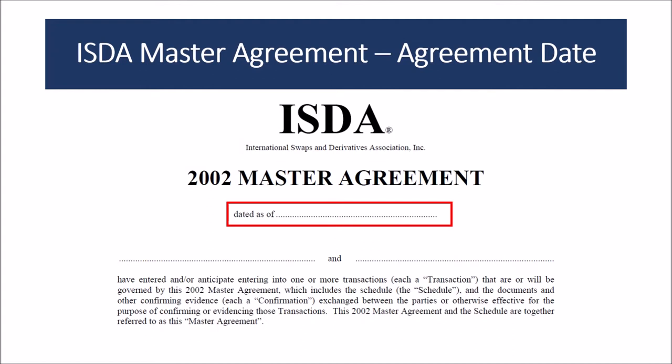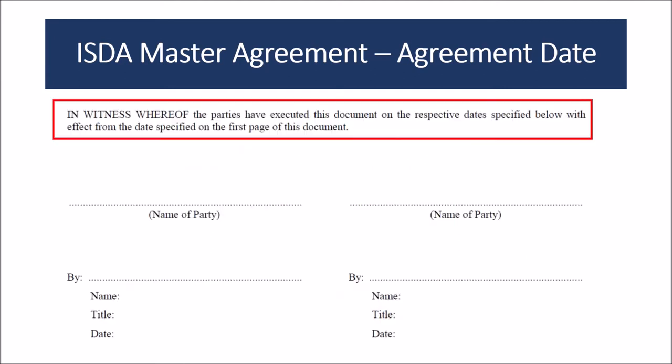The drafted date is written as 'dated as of.' This implies that there can be transactions before the signing of the master agreement, so it is expressed as 'dated as of' rather than simply 'dated.' Even though this looks against best practices — since under English law you date an agreement on the date it is signed — you cannot create a contract by backdating it, as it may lead to forgery. To avoid this confusion, this is also clarified on the last page of the agreement where execution is done.